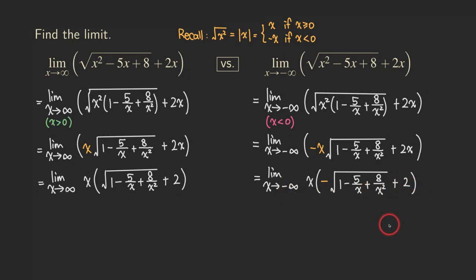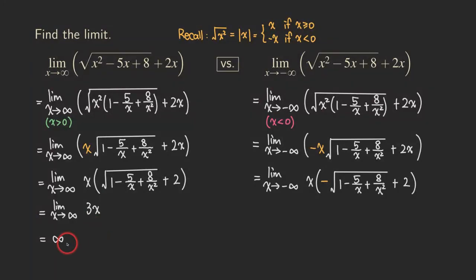When x is approaching infinity, the fractions 5 over x and a over x squared are both approaching zero. So we are left with just 1 under the radical, and just 2 from the other term — that's 1 plus 2, which gives us 3. So we're getting 3x. And when x is approaching infinity, then the answer is infinity. So the limit does not exist in the finite sense, but the function is approaching infinity as x approaches infinity.